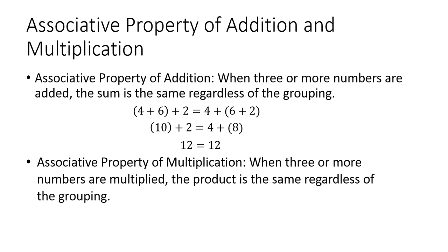The associative property of multiplication is similar to the addition one, except that when three or more numbers are multiplied, the product is the same regardless of the grouping.